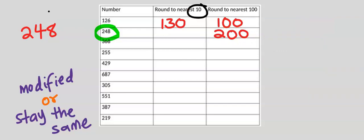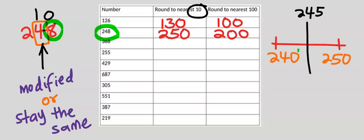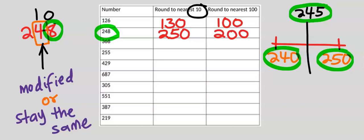For the nearest ten, we are concerned now about four. We're going to see if four will be modified or it will stay the same. Eight can modify four, which will become five, and the eight is now zero. Halfway between 240 and 250 is 245, and 248 is somewhere here, which is closer to 250 than 240.